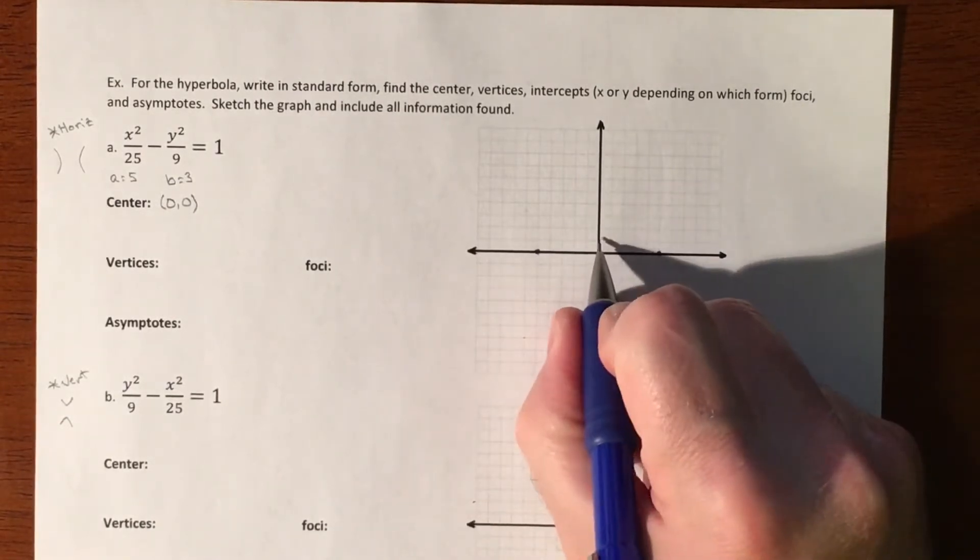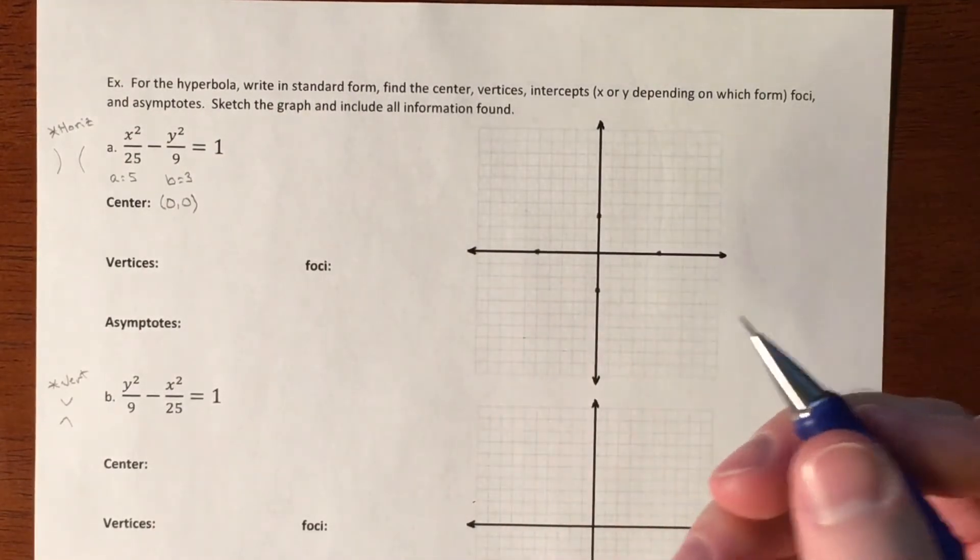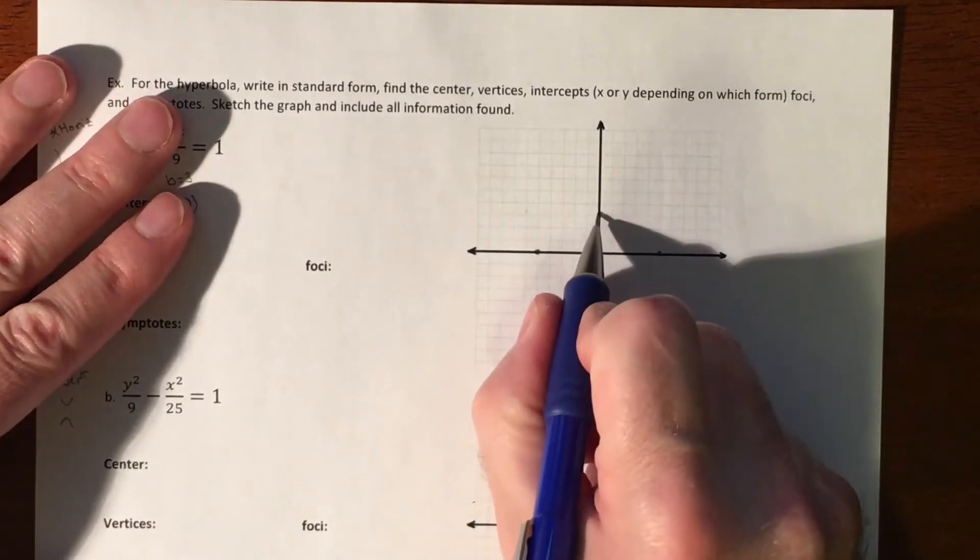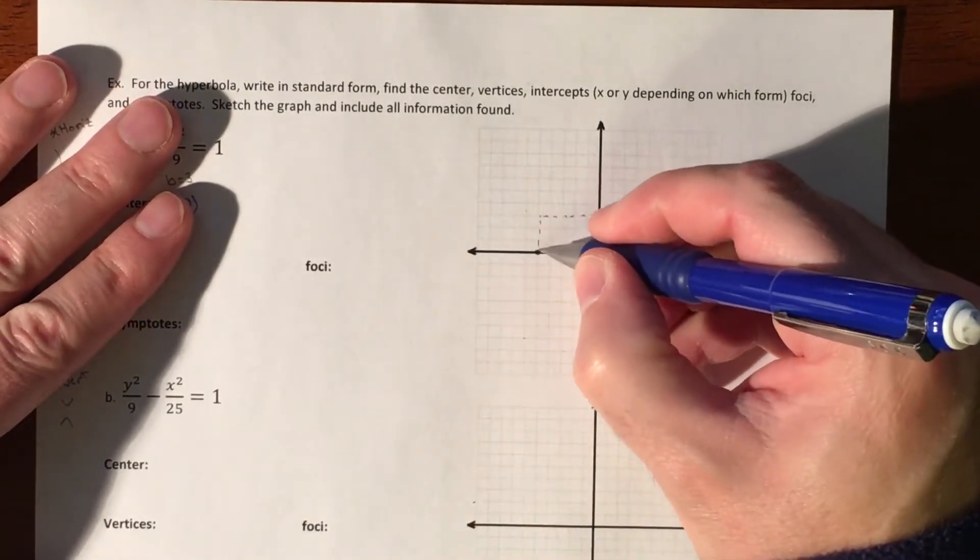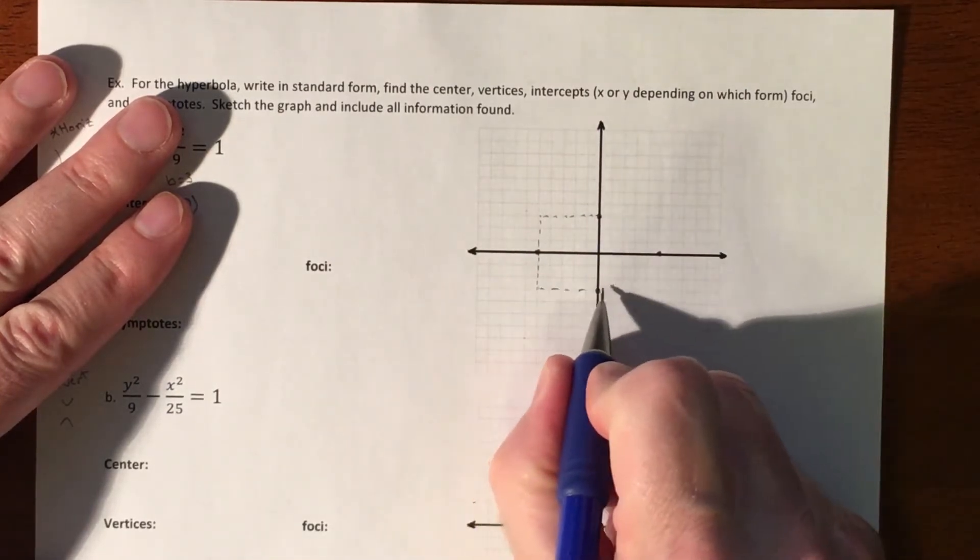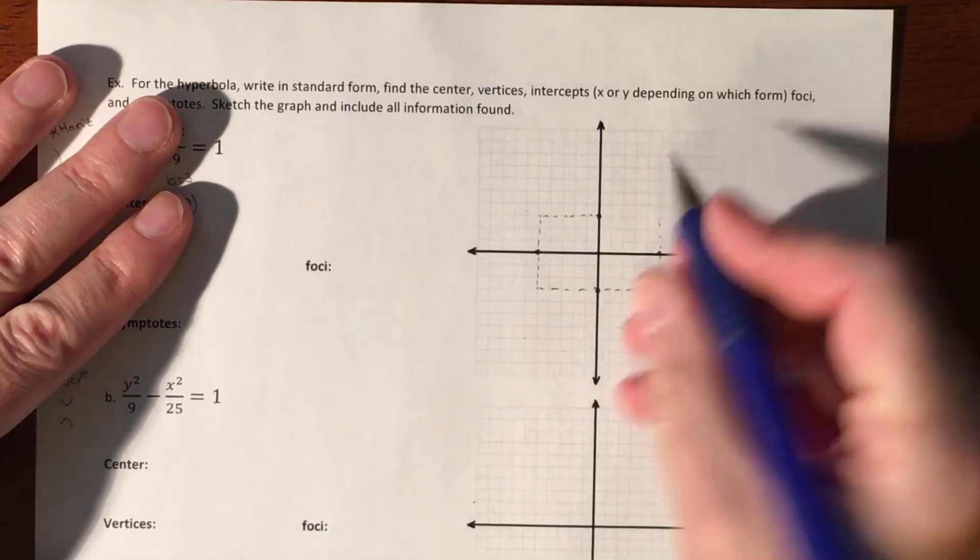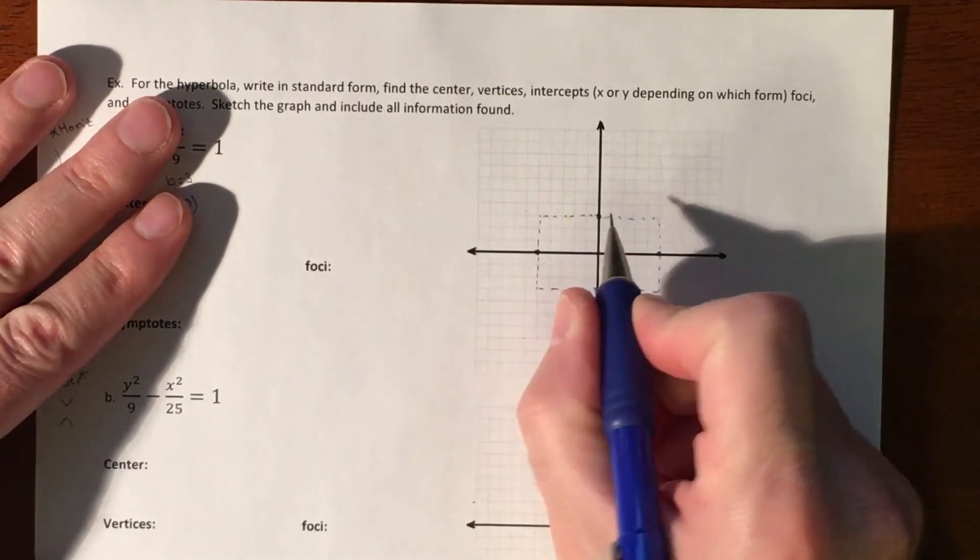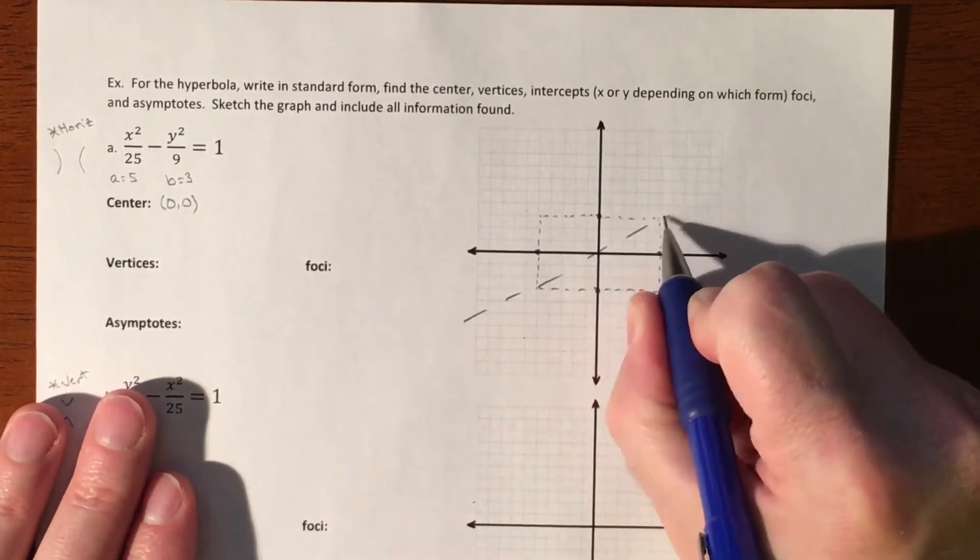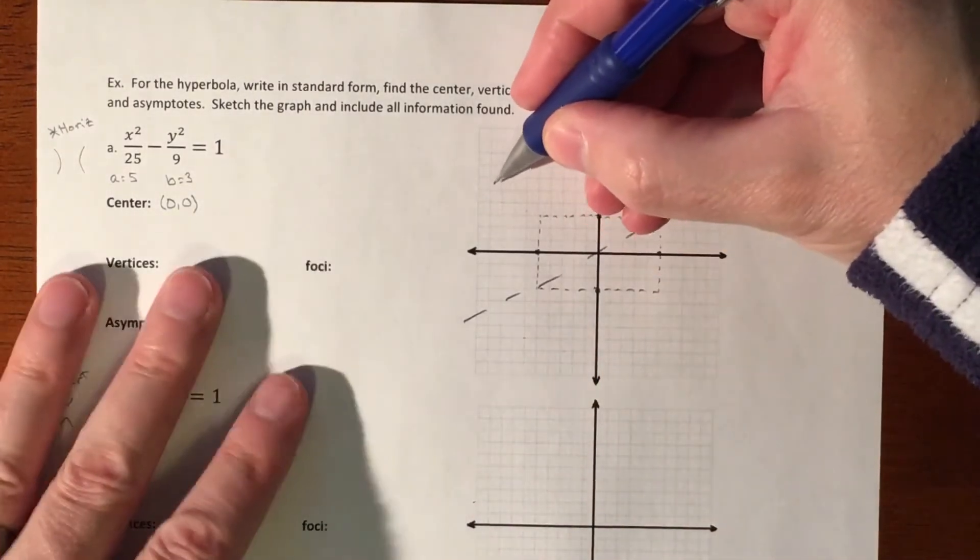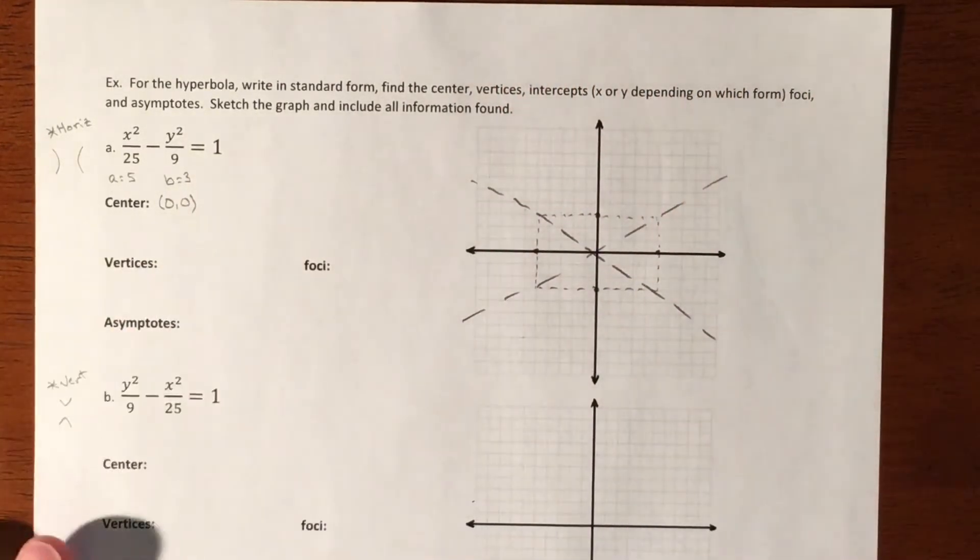We're going to go up and down 3, 1, 2, 3. But it's not an ellipse, so this means that we are building a box, because that box helps us line up our asymptotes. So we have asymptotes like that, and like that.